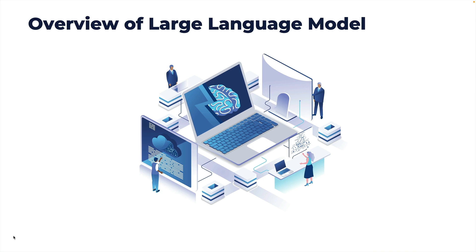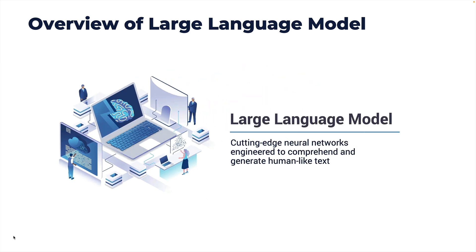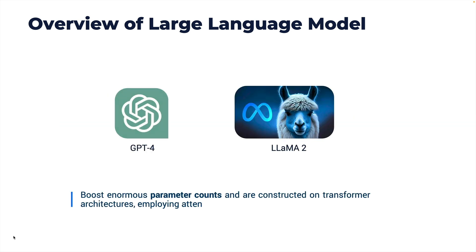Large language models are cutting-edge neural networks engineered to comprehend and generate human-like text. When you provide a prompt, they respond almost like a human that you are interacting with. This is possible because models such as GPT-4 and LLaMA 2 boast enormous parameter counts. We touched upon parameters during the hands-on demo.